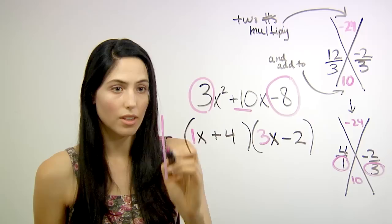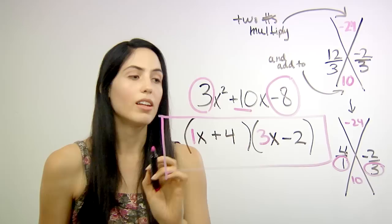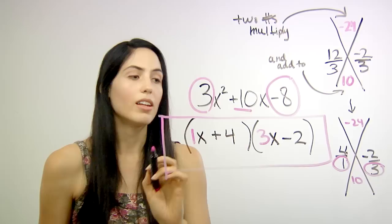This is your factorization, your factoring of your quadratic. And again, if you want, you can always check your answer by multiplying this out, foiling all the terms, and checking that you get back your original quadratic, and you will.